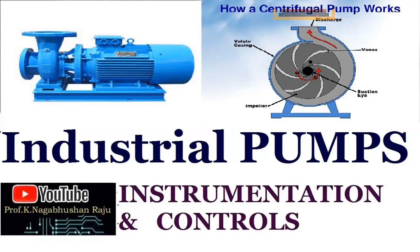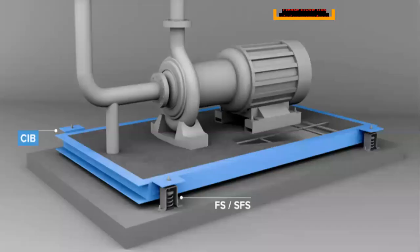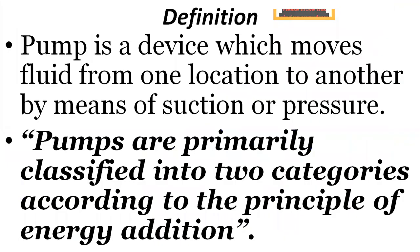Pumps have different classifications, different natures, and different functionalities for different applications. Today we will see what these industrial pumps are, what the types are, how they function, and what the instrumentation and controls associated with them are. This is a typical diagram of a pump normally used at domestic or industry level. The pump is a device which moves fluid from one location to another by means of suction or pressure — it sucks from one side and pumps it to the other side.